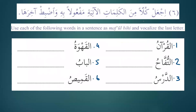Ij'al — make each of the following words the maf'ool bihi and put the proper case endings. For al-Qur'an, you can say qara'tu al-Qur'ana — I recited the Qur'an — or ishtaraytu al-Qur'ana — I brought the Qur'an — or sami'tu al-Qur'ana — I heard the Qur'an. Now it's up to you — whatever verbs you know, inshallah, you can make sentences.